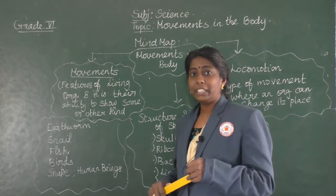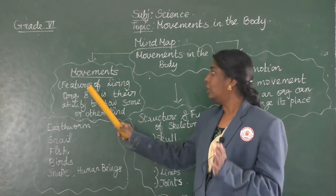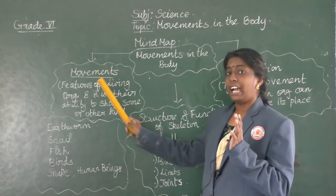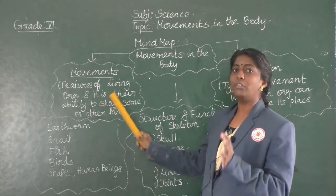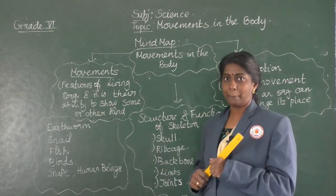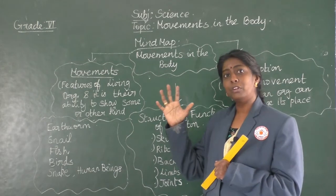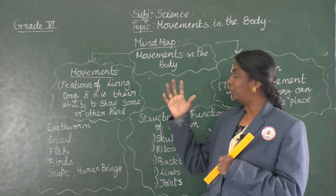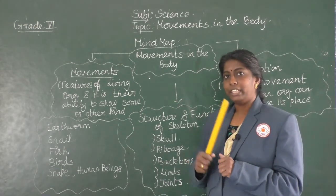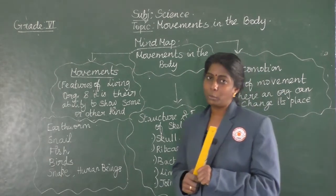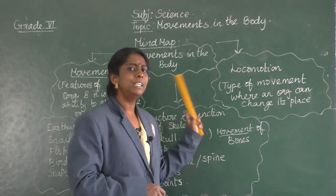So what do we mean by movement? Movement is one of the main features of a living organism — the ability to show some or other kind of movement. For example, if you are just closing and opening your finger, that is one example of movement. And one more related term is locomotion.